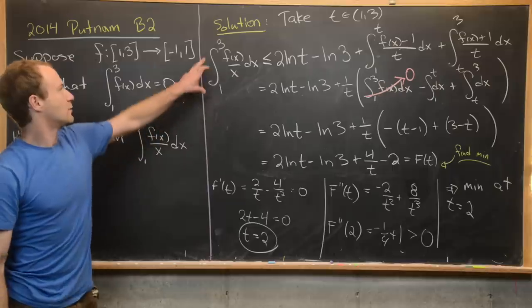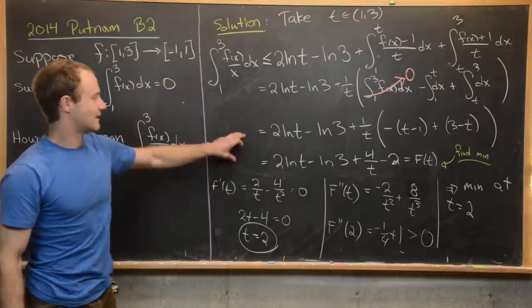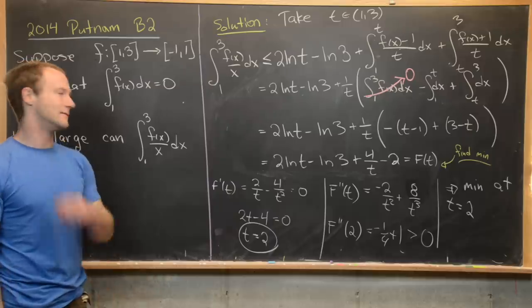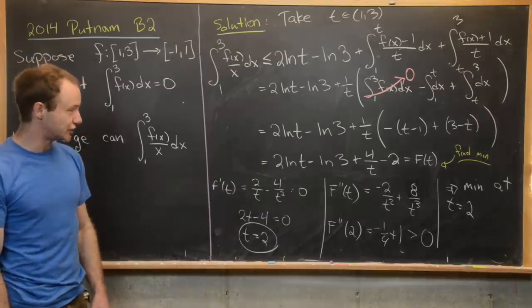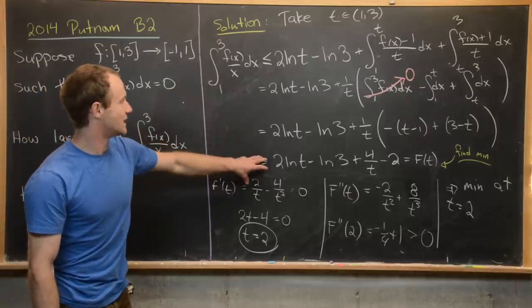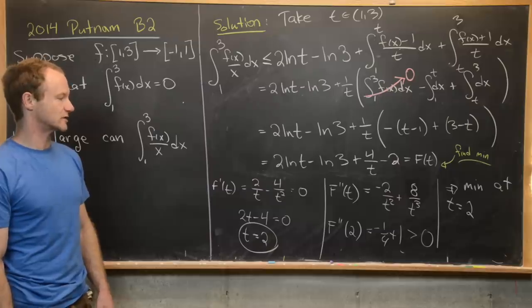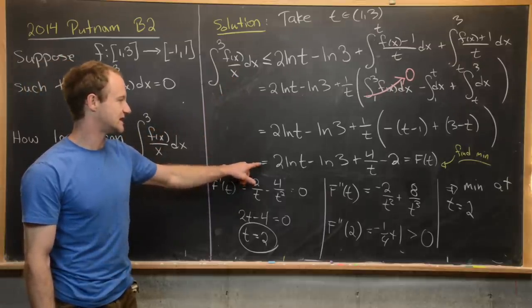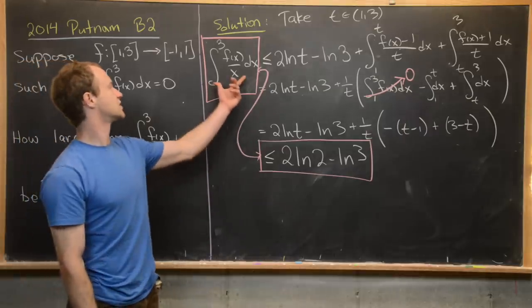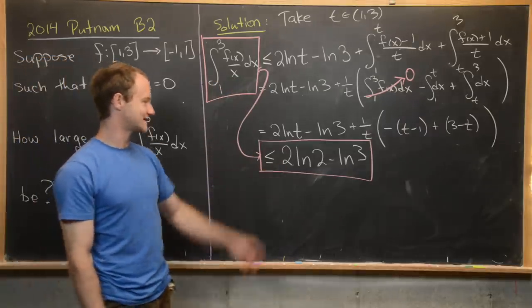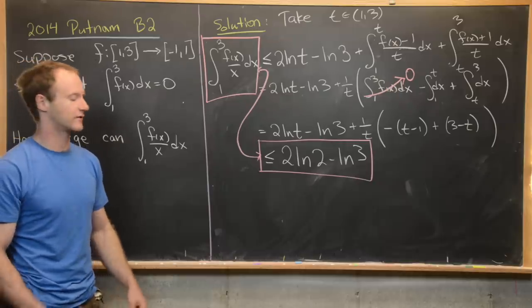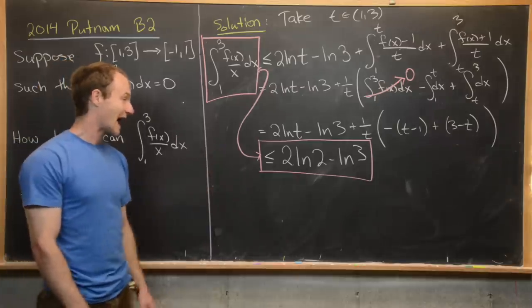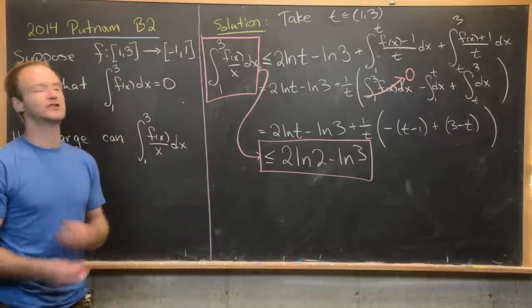Since the minimum of F(t) occurs at t = 2, our goal integral is always less than or equal to F(2) = 2·ln(2) - ln(3). We've determined that the integral from 1 to 3 of f(x)/x dx is always less than or equal to 2·ln(2) - ln(3). Now we want to show that we can actually achieve this maximum value by carefully choosing the function f.